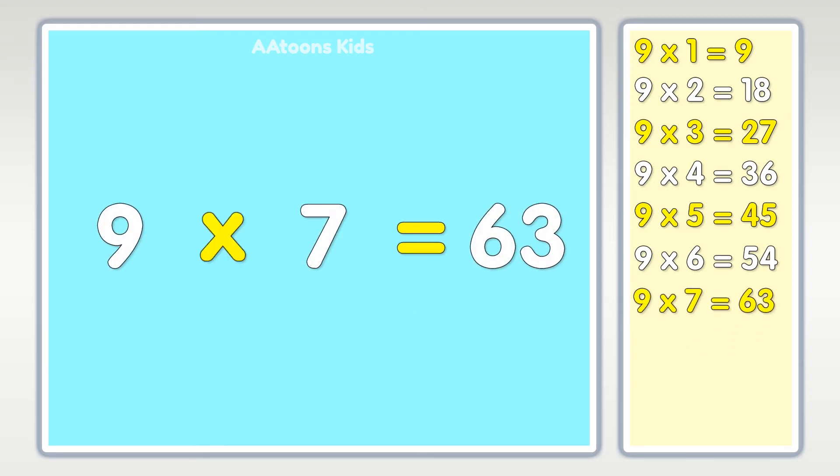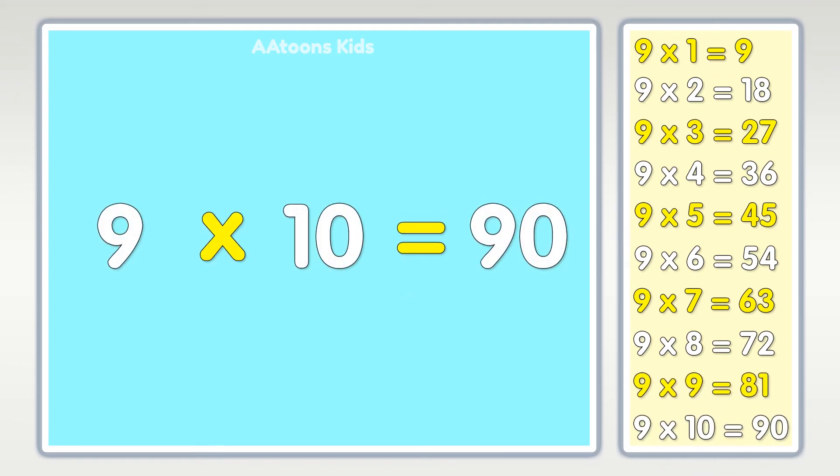Nine times seven is sixty-three, nine times eight is seventy-two, nine times nine is eighty-one, nine times ten is ninety.